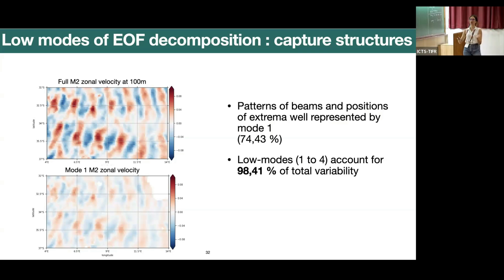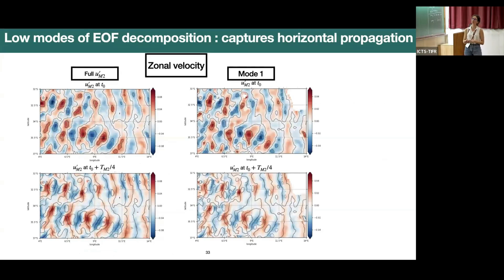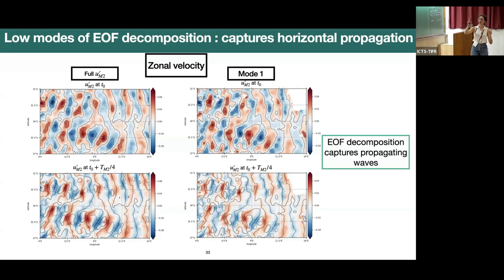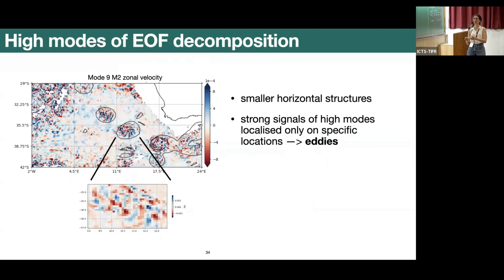The remaining six modes account for about one percent. We check whether this method captures the propagating features of the internal tide. Showing mode one at the first time step and a quarter period later, the EOF decomposition captures this propagating feature of the waves quite well in the first mode. The same holds for the meridional velocity.